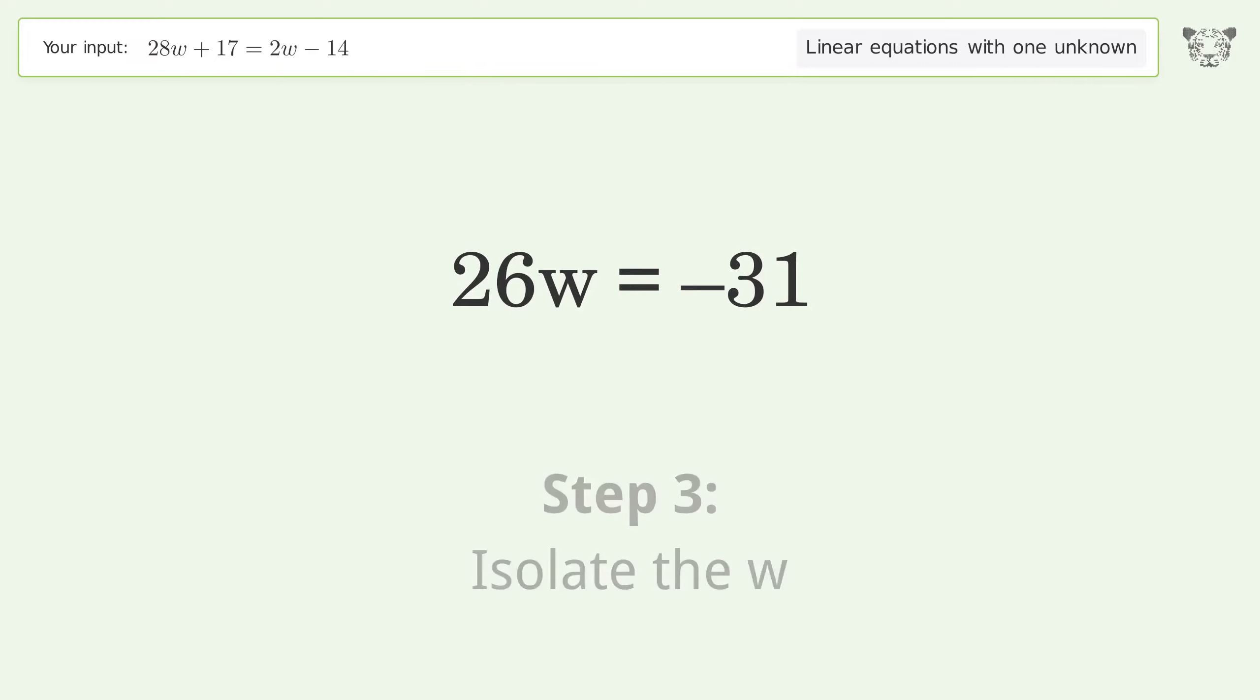Isolate the w. Divide both sides by 26. Simplify the fraction. And so the final result is w equals negative 31 over 26.